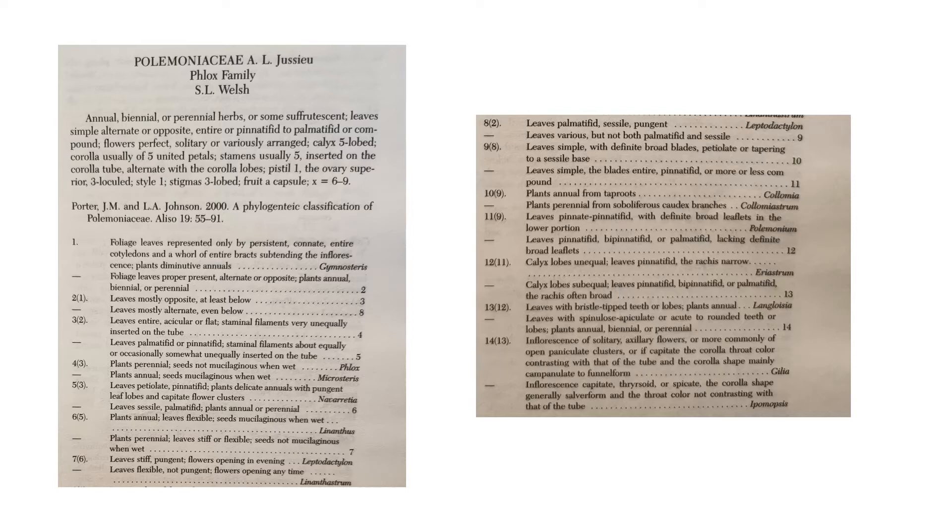So in this case, when we go to this first situation, foliage leaves are proper present. And that's the key difference here. That's going to lead us to two. And so two takes us to leaves mostly opposite or leaves mostly alternate. And this is definitely the case. If you review the video from the Dragon Utah field trip, that's where this plant comes from. And it has alternate leaves. So we can move on to eight. And the leaves are not palmately-fid. They aren't pungent. And so we're here at leaves various. And that's going to take us to nine. And they are simple. And they are pinnatifid.